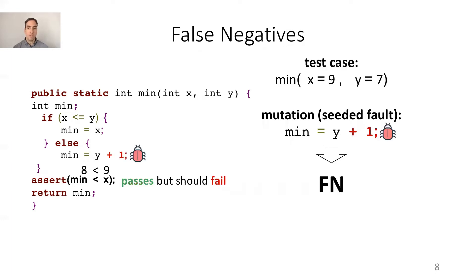An example of false negative is the program state obtained by executing this test case on a faulty version of the method. This is an incorrect program state because min should be 7, not 8. And this is a false negative for the assertion because 8 less than 9 is true, so the assertion passes but it should fail.